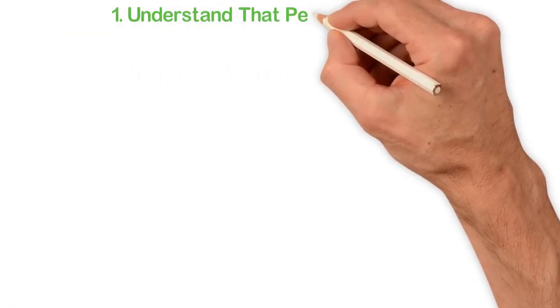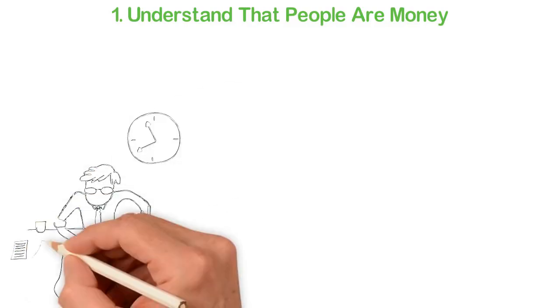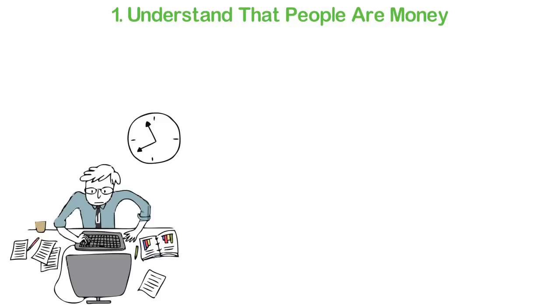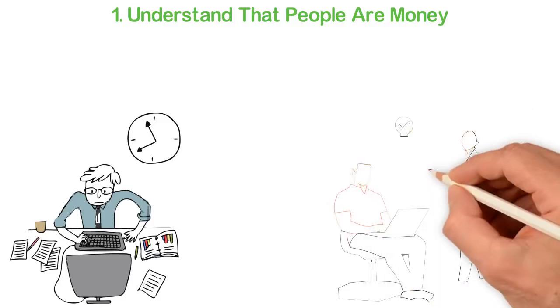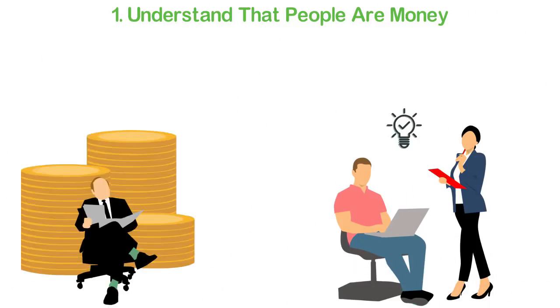Let me leave you with a few tips. Number one: Understand that people are money. This is the most important point in this video because if you understand that people are money, knowing that there's a room where a billion people live will make you restless. You should not sleep until you figure out how to serve a percentage of the billions of people in this room through the internet.